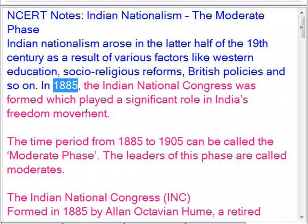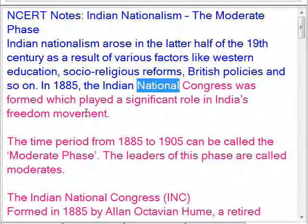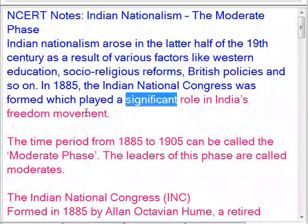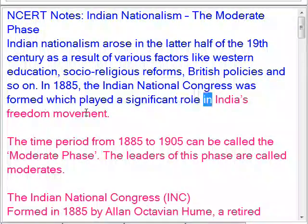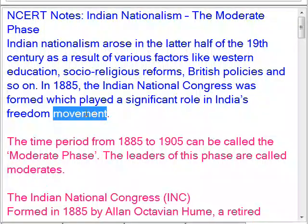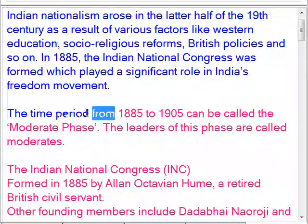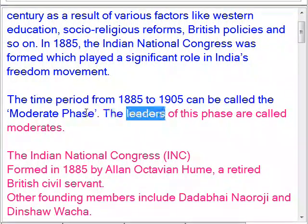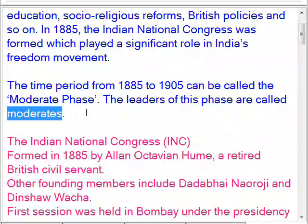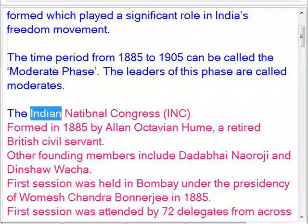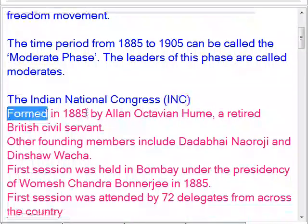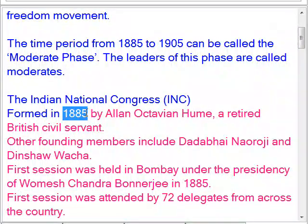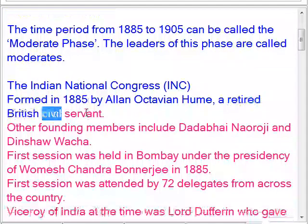In 1885, the Indian National Congress was formed, which played a significant role in India's freedom movement. The time period from 1885 to 1905 can be called the moderate phase. The leaders of this phase are called moderates. The Indian National Congress was formed in 1885 by Allan Octavian Hume, a retired British civil servant.